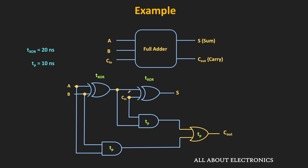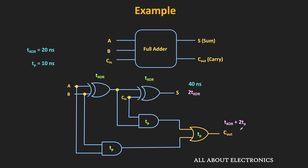The sum output is available after two XOR gate delays, and the carry output is available after Txor + 2×Tp, which is the maximum propagation delay path for generating the carry. In this case, the sum output is available after 40 ns, and the carry output is also available after 40 ns for one full adder circuit.